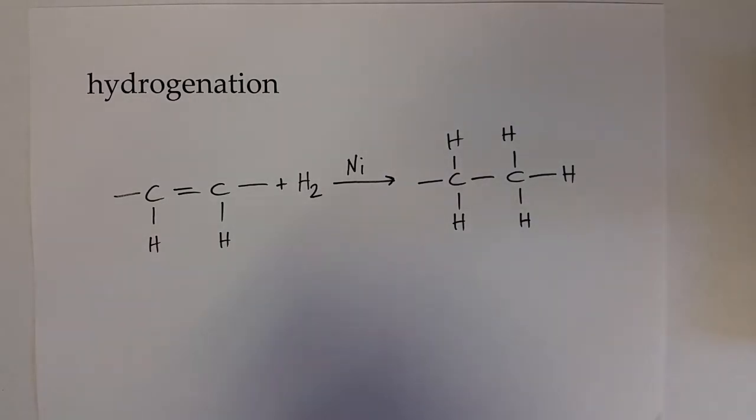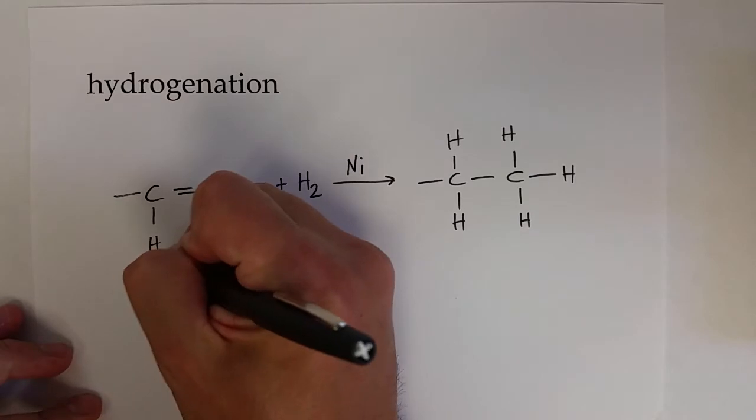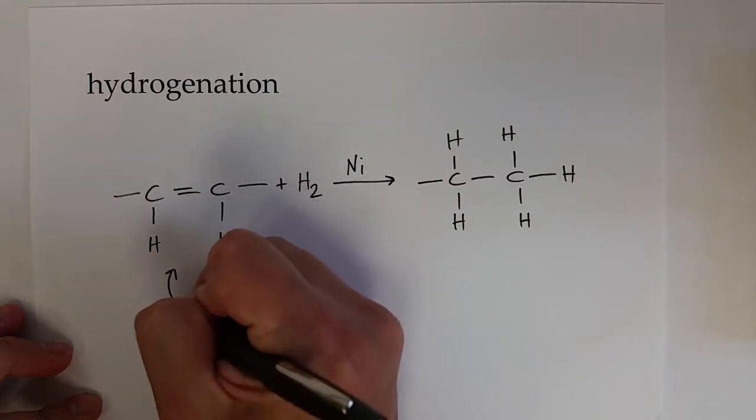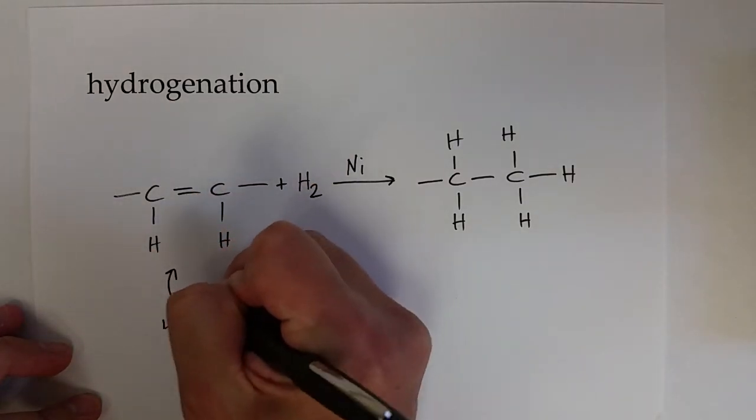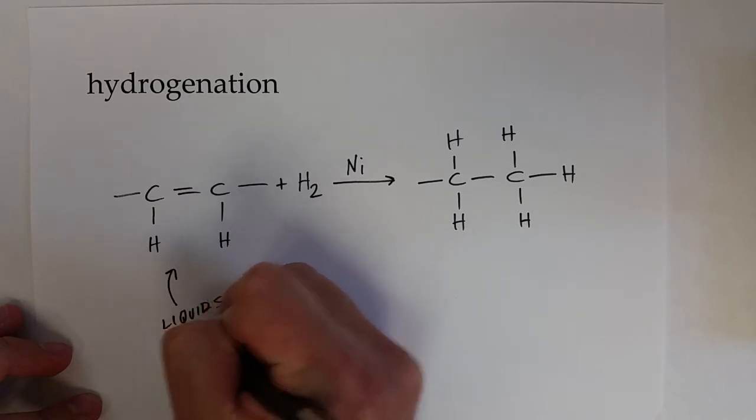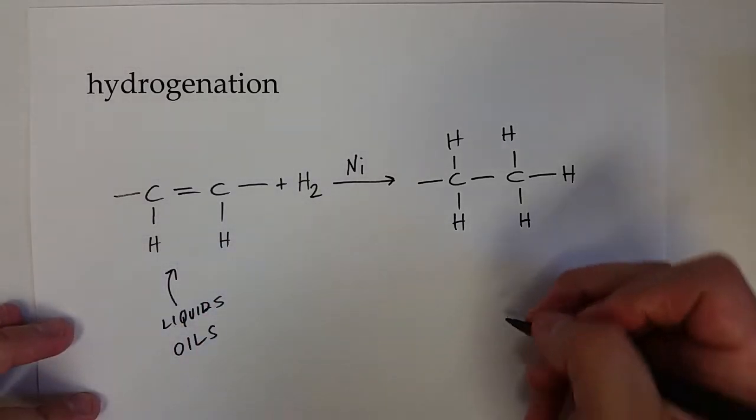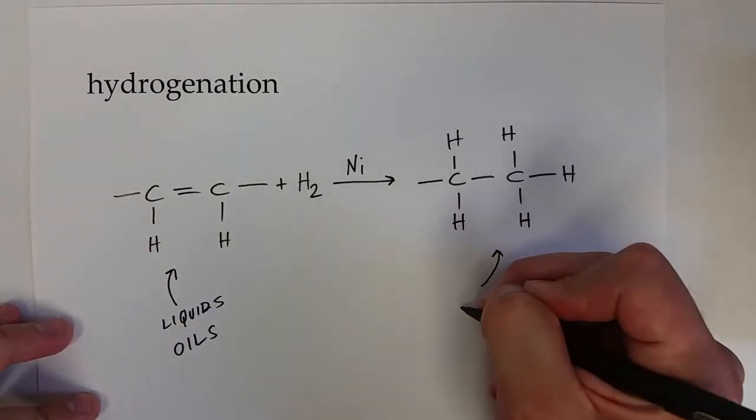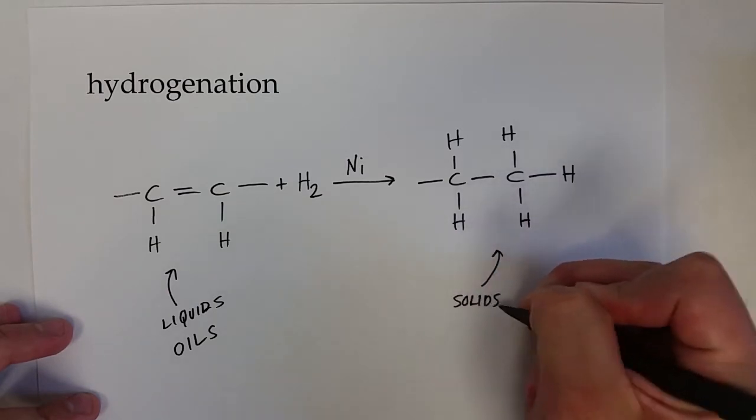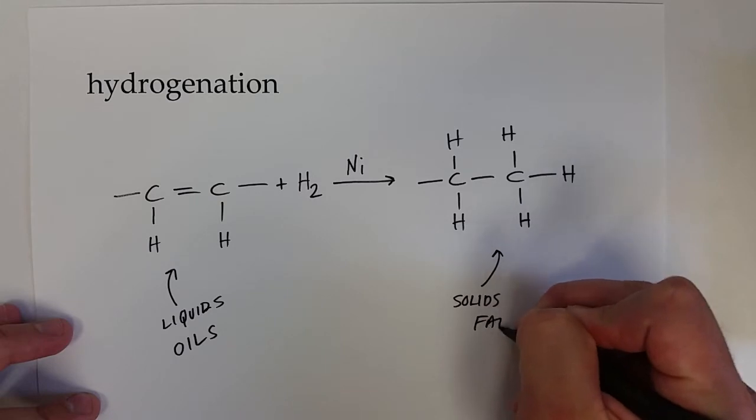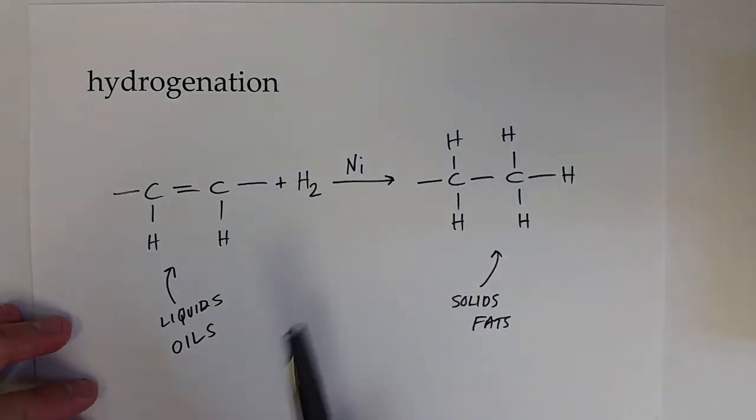Previously we mentioned that unsaturated fatty acids are often liquids at room temperature, or oils, and saturated fatty acids are often solids at room temperature, or fats. And so this is one way to convert liquid oils from plants to solid fats.